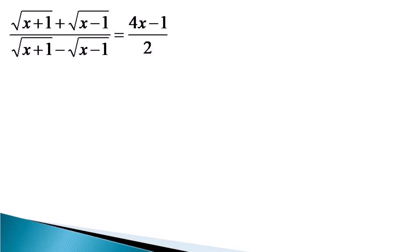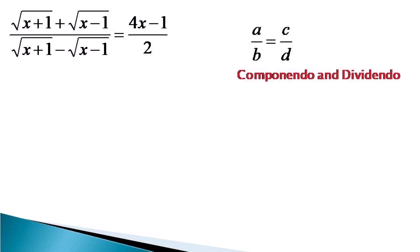In such a situation, when the equation is in fractional form, we make use of an algebraic formula called componendo and dividendo. If two fractions are equal — like a/b is equal to c/d — then from componendo and dividendo, a plus b over a minus b equals c plus d over c minus d. That is, the ratio of sums and differences of the original fractions are also equal.